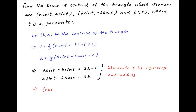Therefore, the left-hand side is equal to (a·cos(t) + b·sin(t))² + (a·sin(t) − b·cos(t))², and this is equal to the right-hand side, which is (3h − 1)² + (3k)².